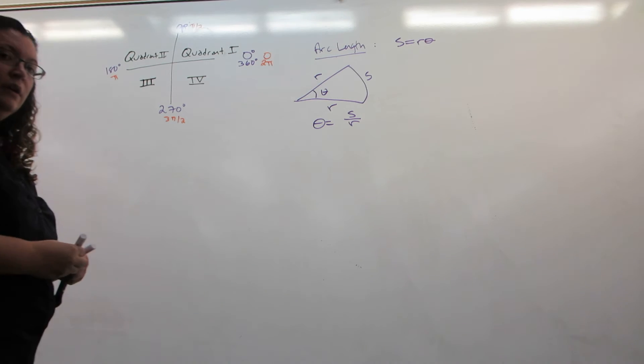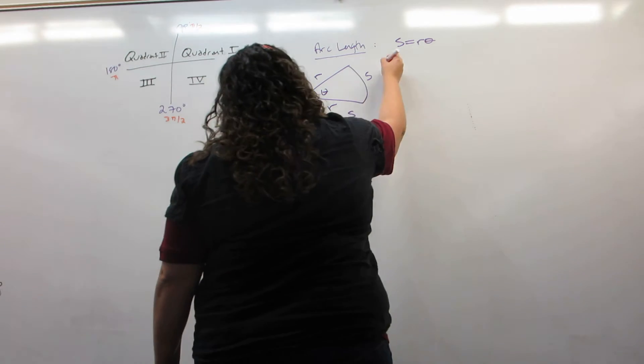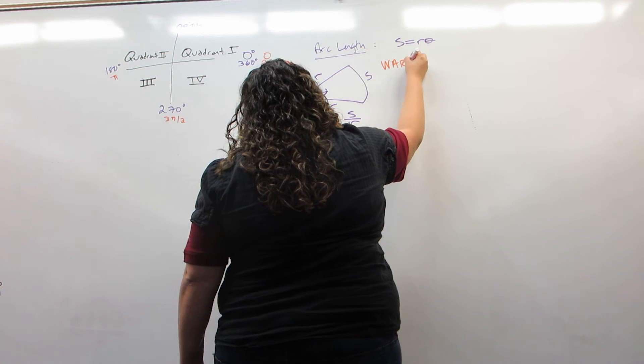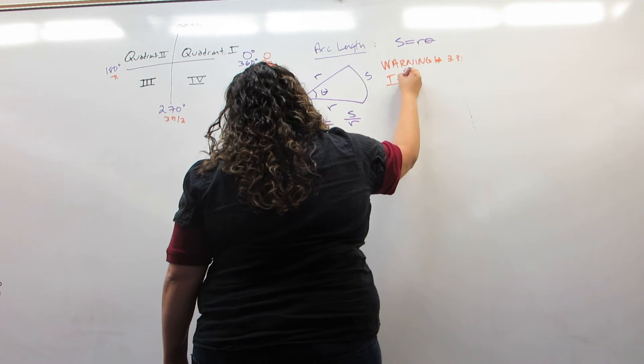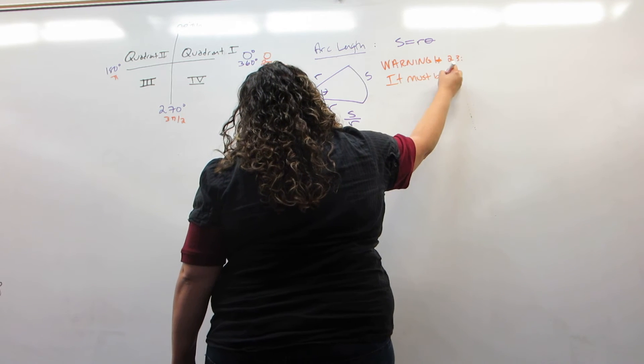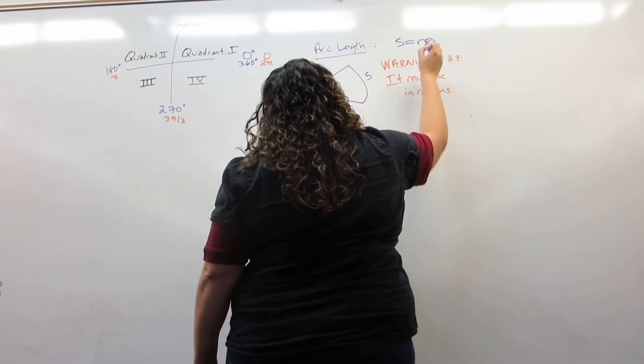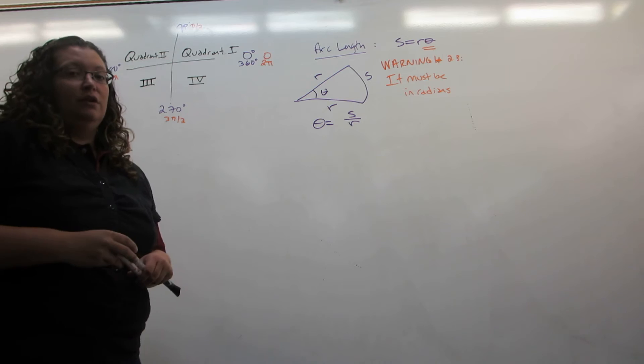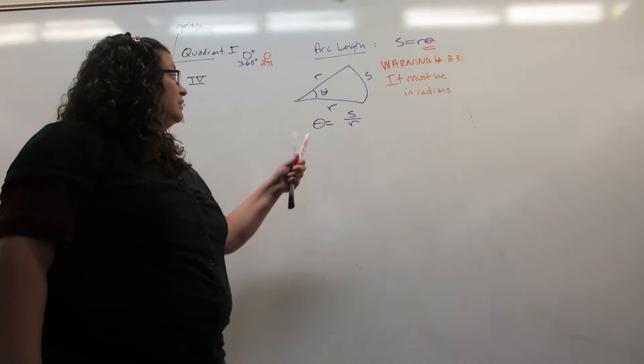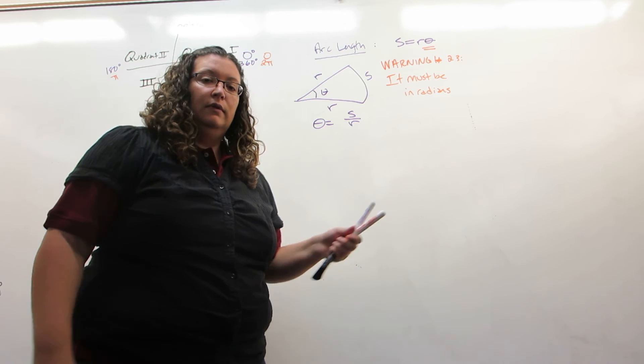Now we just have one thing to be careful of, and this is warning number 23. Theta must be in radians. What I mean by that is the angle theta must be in radians in order to use the arc length formula. And the reason is because the formula came from the definition of radians.